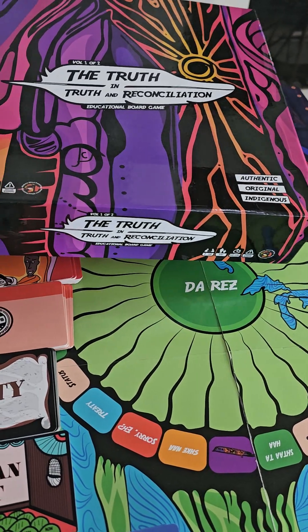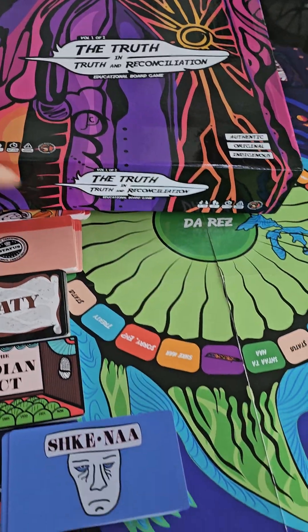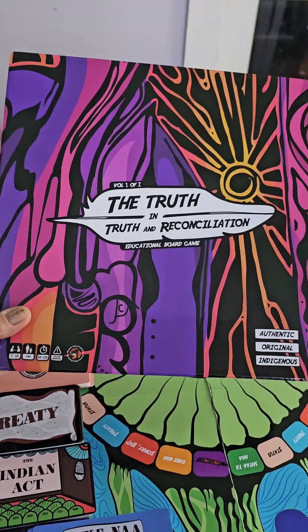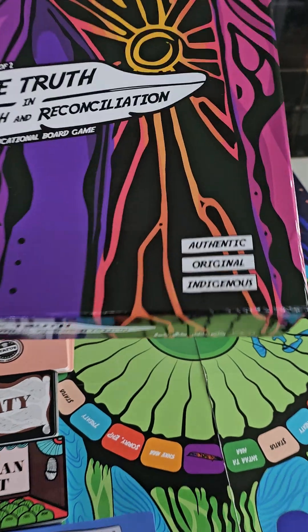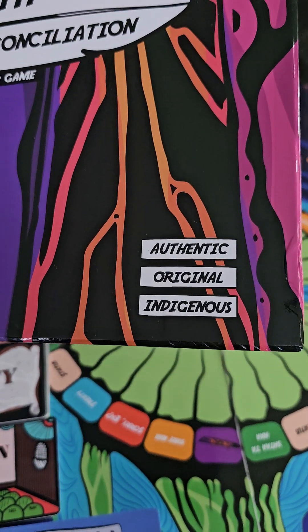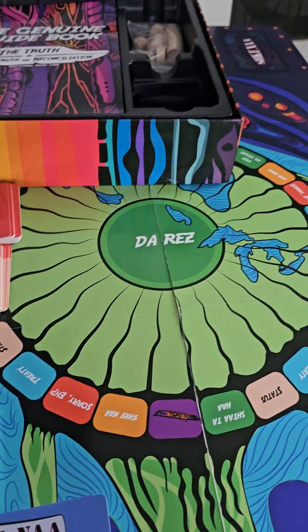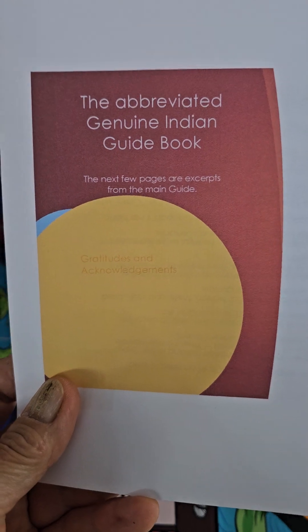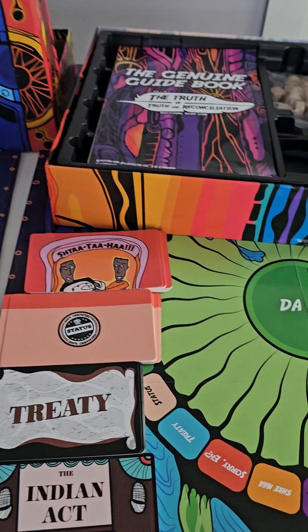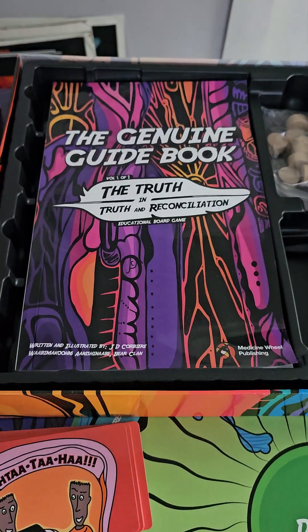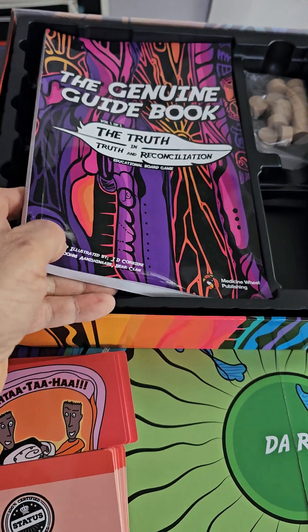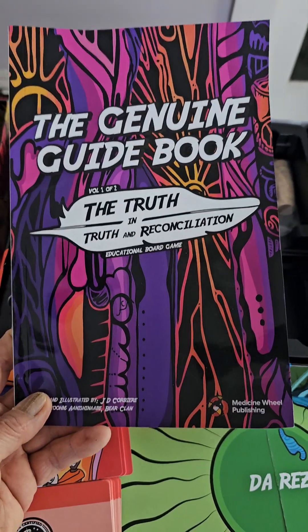This is the final or print version of the game that is going to soon be available. It's called The Truth in Truth and Reconciliation. Again, the emphasis is on authentic, original, and Indigenous. When you get the game, you will now take what I call the abbreviated Genuine Indian Guidebook — and now it becomes the Genuine Guidebook. They took the Indian out of it, but I suppose that's okay.